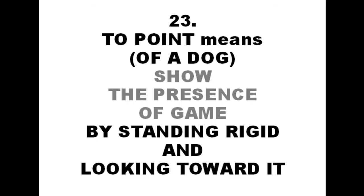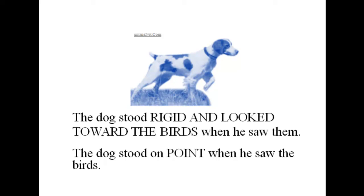To point means of a dog, show the presence of game by standing rigid and looking toward it. The dog stood rigid and looked toward the birds when he saw them. The dog stood on point when he saw the birds.